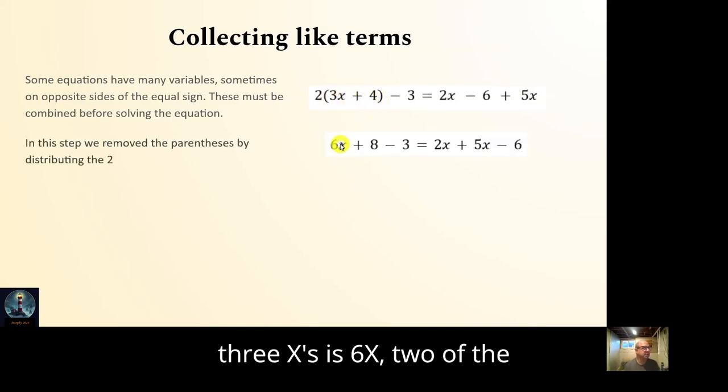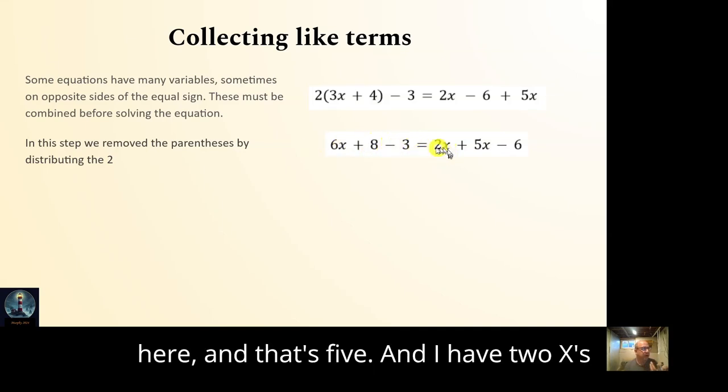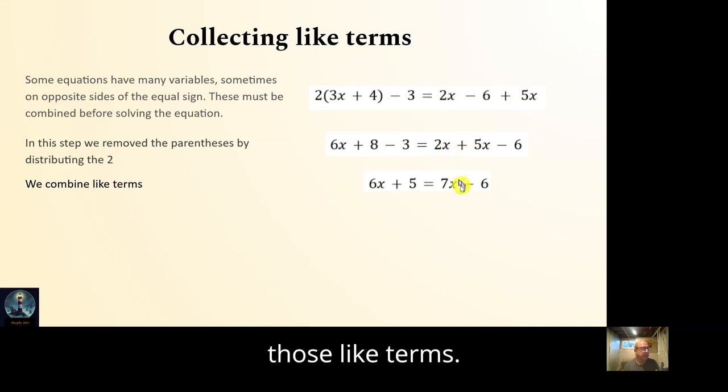So 2 of the 3x's is 6x. 2 of the 4's is 8. But now I've got an 8 minus 3 here and that's 5. And I have 2x's here and 5x's here, so that's a total of 7x's. So I can combine those like terms.